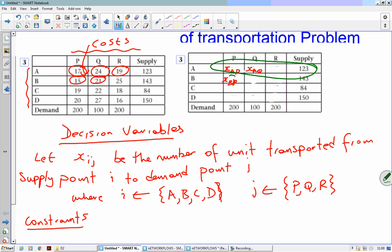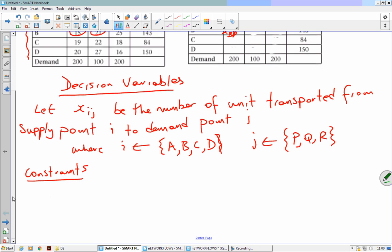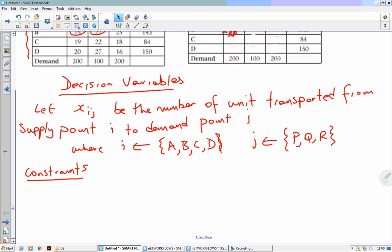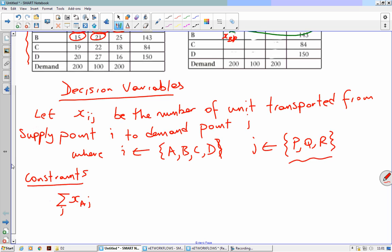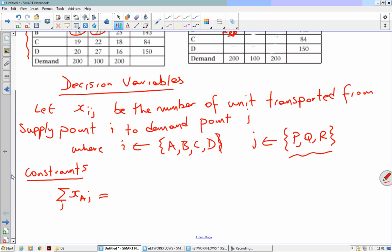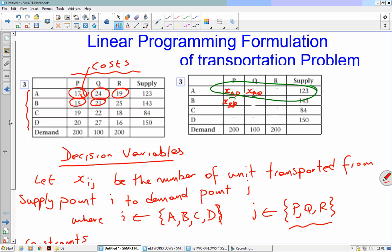Okay, so the constraints. We've got supply constraints here, so we've got a constraint there. Let's write it in the sigma way. Notice that the A bit hasn't changed. Okay, so we can write that as sigma xAj, and we've got, because we've already defined what j is (P, Q, R), we know what j is, so we don't have to write j is a member of P, Q, R there. We've done that. So j equals to 123.